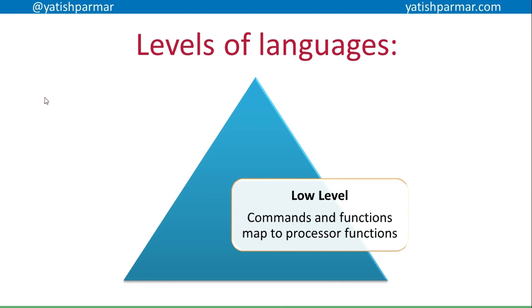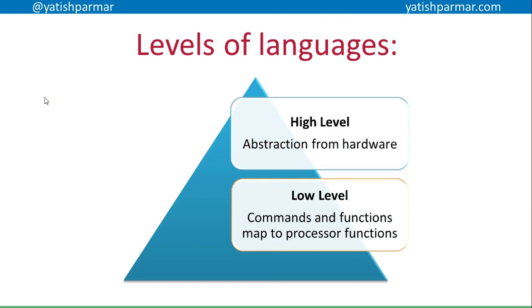Another way of looking at it is by levels of languages. Low-level languages have commands and functions that map directly to processor functions — that corresponds to the first two generations: machine code and assembler. High-level languages have an abstraction from the hardware, covering all the more modern languages we use to program. With low-level languages, you're programming using instruction sets, and CPUs like AMD and Intel x86 processors may share the same instruction set but have totally different internal functioning, which relates to portability of code.